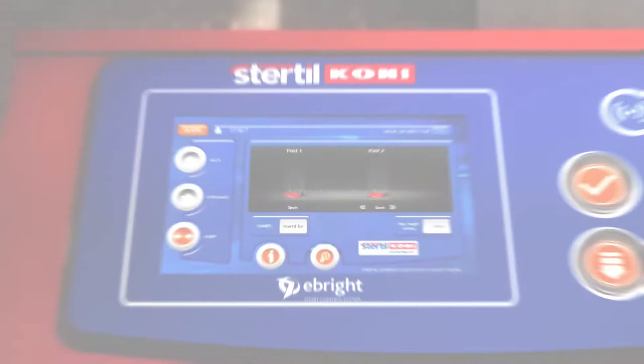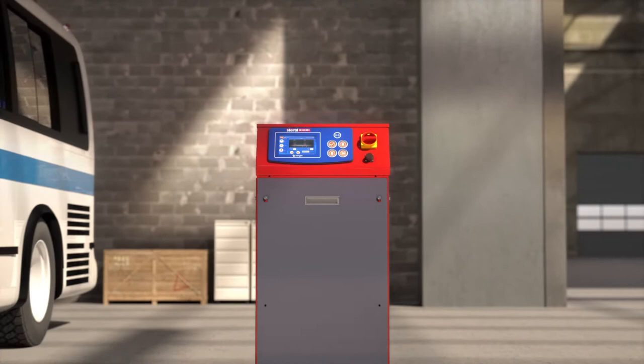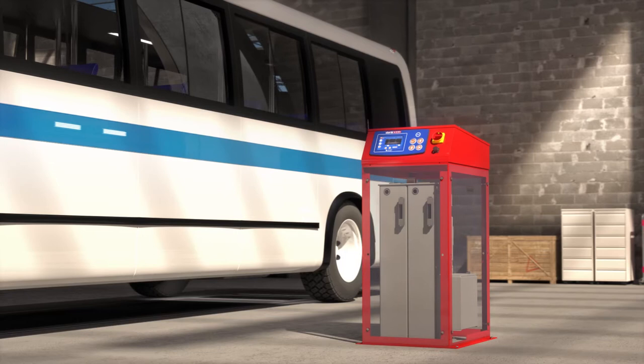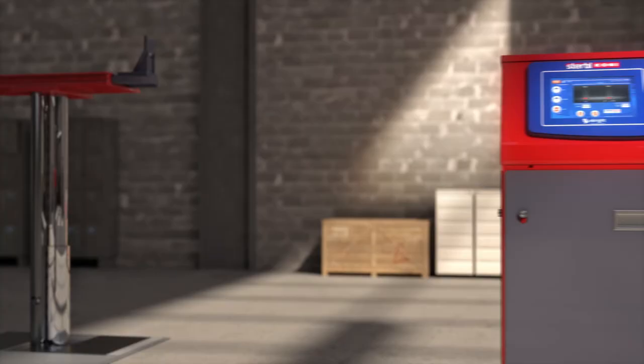Eye-catching is the above-ground console that conveniently houses the power unit. The power unit is thus well protected against humidity and debris, which is always a problem when it is located in the pit. Another advantage of this above-ground location is the easy access for maintenance and inspection.